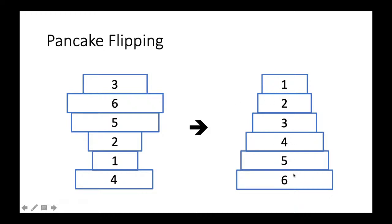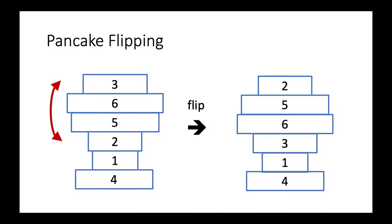The operation we can perform is called flipping. This is the top part and this is the bottom part. A flipping operation selects any number of pancakes from the top and reverses them. For example, if the pancakes read 3, 6, 5, 2 from the top, after flipping those four pieces it becomes 2, 5, 6, 3.